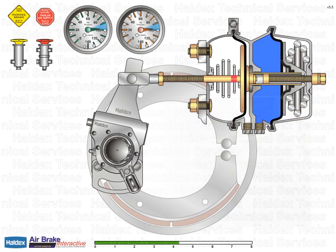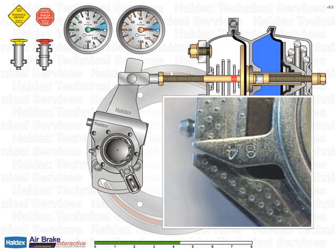On Haldex AA1 automatic brake adjusters, ensure that the installation indicator pointer is within the indexing slot on the adjuster face when all brakes are released. This indicates that the brake adjuster control arm is properly set up.